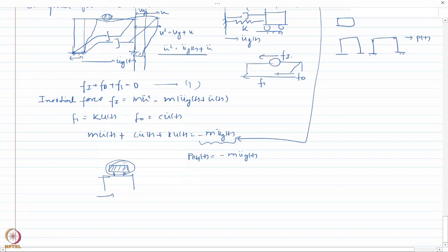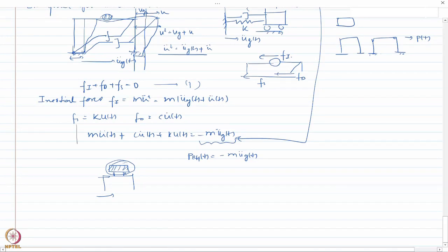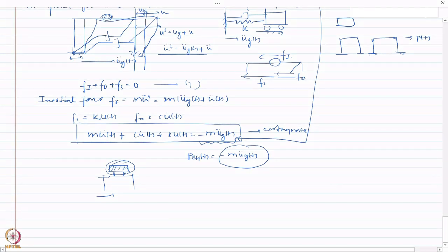A very good example is what happened during the Bhuj earthquake in Gujarat: many residential houses had water tanks at the top. These water tanks are very heavy masses supported at the top where acceleration is highest — ground acceleration, then structural acceleration, then the response at the top. Because these are heavy concentrated masses, the earthquake force on them is huge, which led to failure of many overhead tanks and ultimately the failure of buildings.